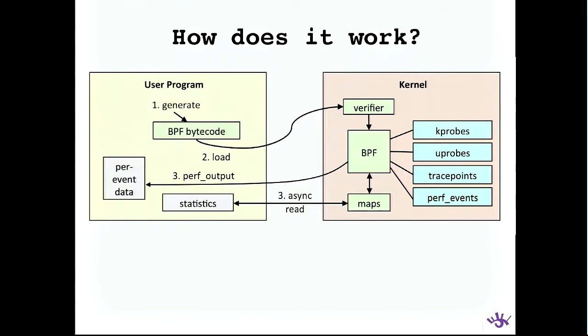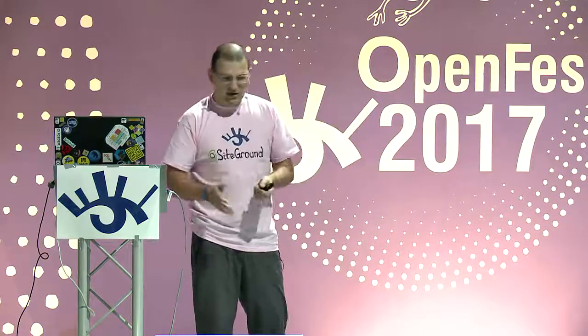BPF is finite — you have a limit on the number of calls within a BPF program and you cannot make loops. You have to reference different BPF code if you want to jump somewhere. The verifier ensures your program will finish and won't stop midway. After verification, it goes to the BPF engine, which has hooks in different parts of the kernel: kprobes, uprobes, tracepoints, perf events, and parts of the network stack.